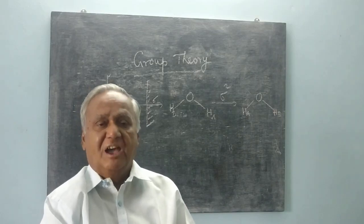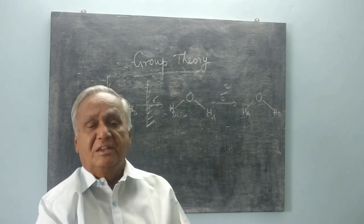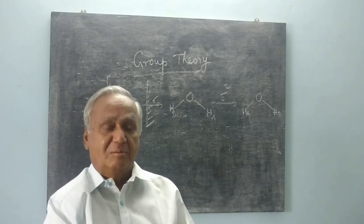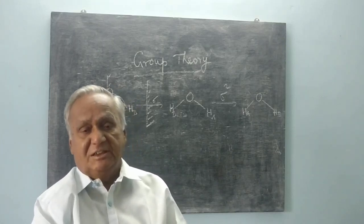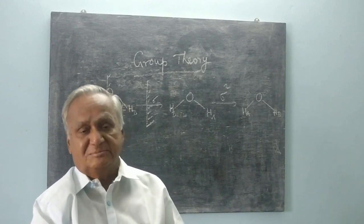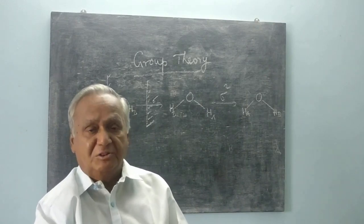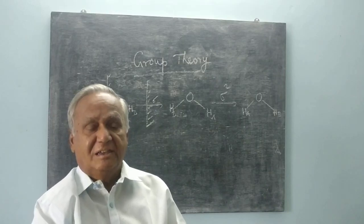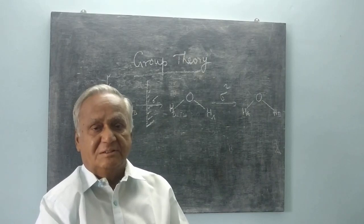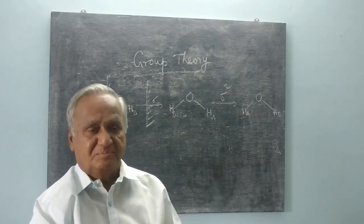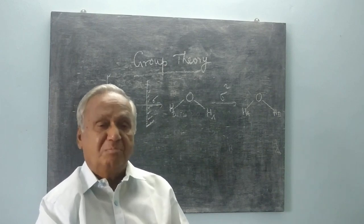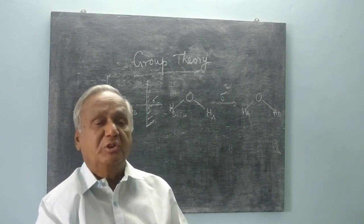The planes have been classified into vertical plane, horizontal plane, and dihedral plane. A vertical plane contains the major axis, denoted sigma-V. A horizontal plane bisects the major axis, denoted sigma-H. A dihedral plane is a plane which bisects the angle between two C2 axes.